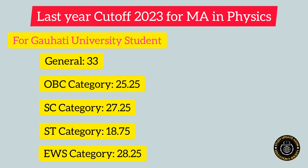For students belonging to the SC category, the cutoff was 27.25. For the ST category, including both ST Hills and Plains, the cutoff was 18.75. And for students belonging to the EWS category, the cutoff for MA in Physics entrance exam under Guwahati University was 28.25.